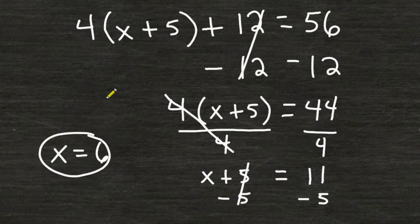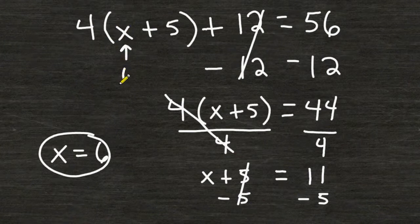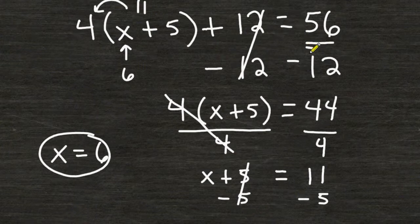And we know this because if you were to go to the original equation and replace the variable x with the number 6 and solve, we should come up with the answer of 56. So let's just check to make sure. 6 plus 5 is 11, and 11 times 4 is 44, and if you add 12 to 44, you would get 56. Therefore, x is equal to 6.